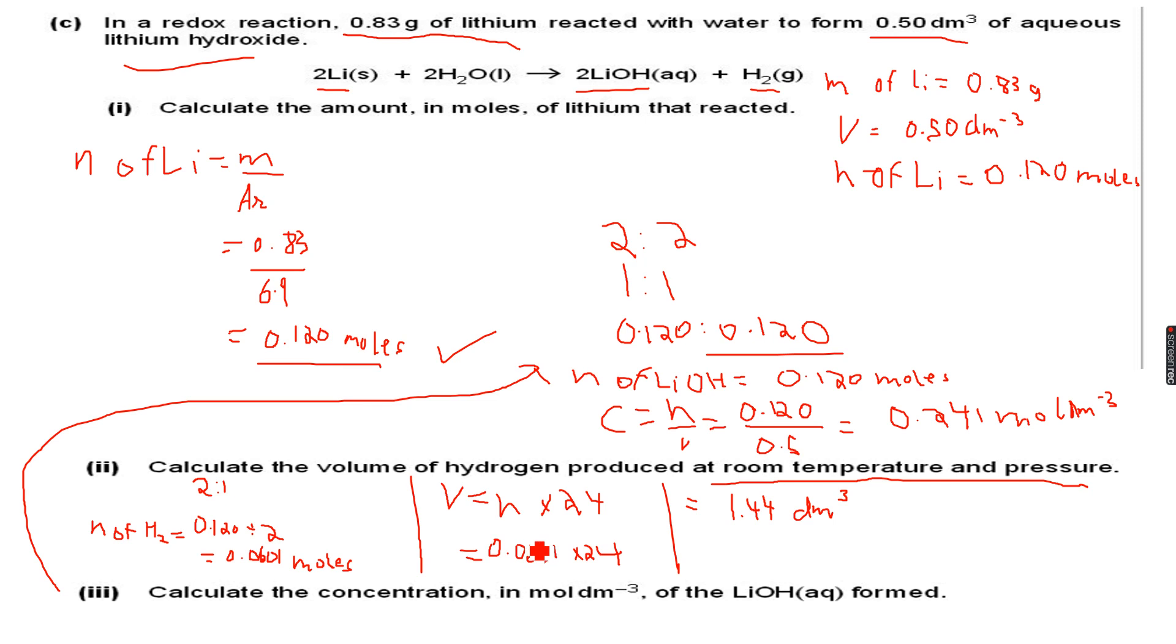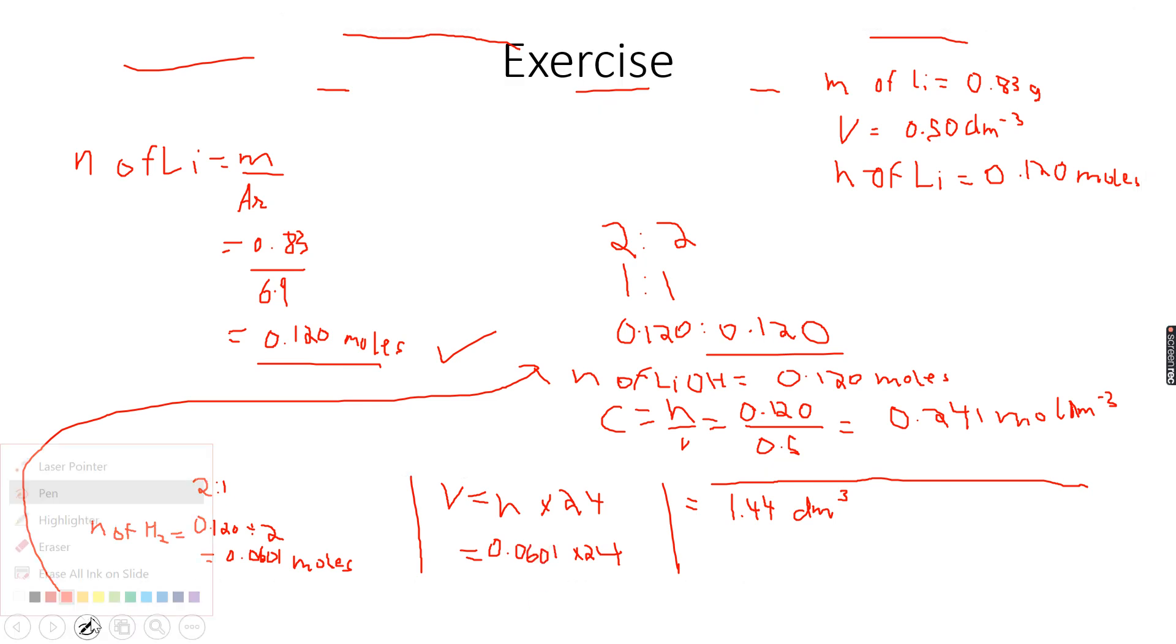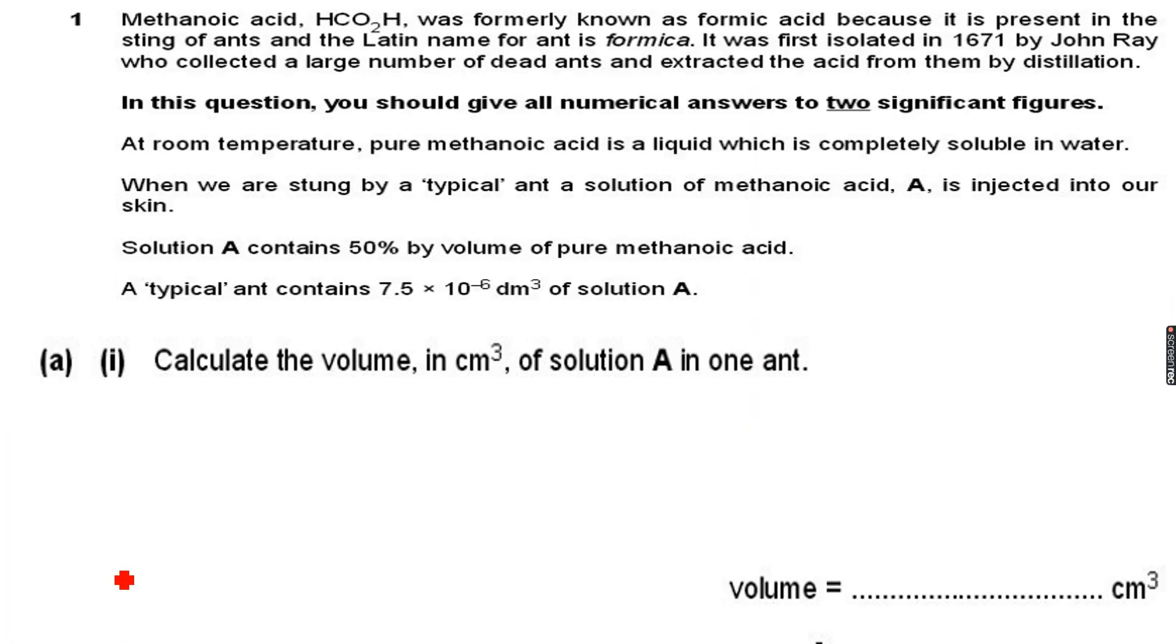Now let's do another one. This is a very long question. You can see they have given so much information in this one. So let's start reading: Methanoic acid, HCO₂H, was formerly known as formic acid.